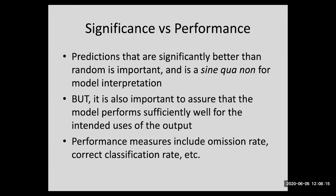Last point is the difference between significance and performance. Again, predictions that are significantly better than random, that's really crucial. If your model is not predicting significantly better than random, don't interpret it, please. But you can have a model prediction that's better than random that still may not be good enough, may not be performing well enough for what you need for your model. Why are you doing this model? It may be 1% better than random. It's significant, but it may not be very good for your purposes.